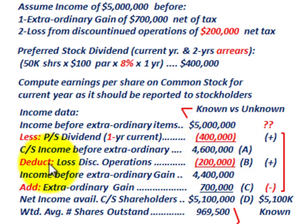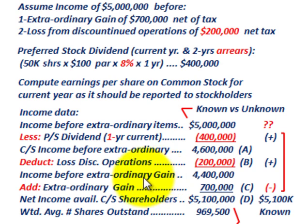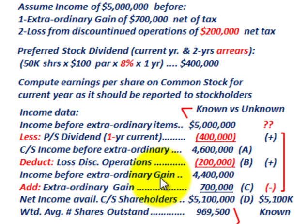Next, we deduct the loss from discontinued operations of $200,000 from $4,600,000, giving us income before the extraordinary gain of $4,400,000. Then we add in the extraordinary gain of $700,000 to arrive at net income available to common stock shareholders of $5,100,000.